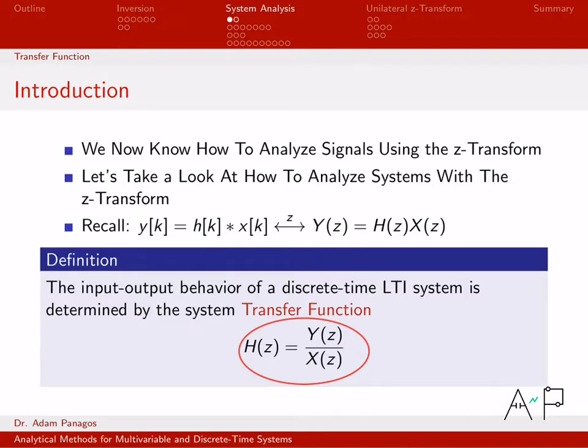This is a very important quantity. When written in the frequency domain as a function of f or omega, we call it the frequency response of the system. This quantity describes the linear system in the frequency domain. Now in the z domain, we call it the transfer function of the system.